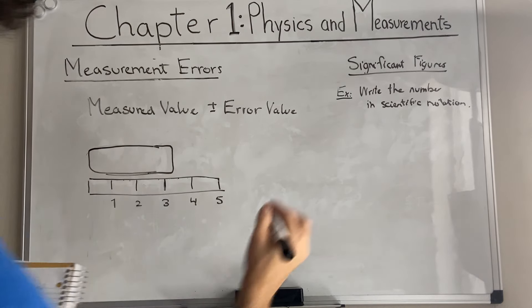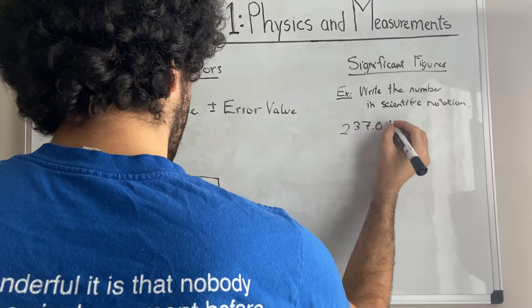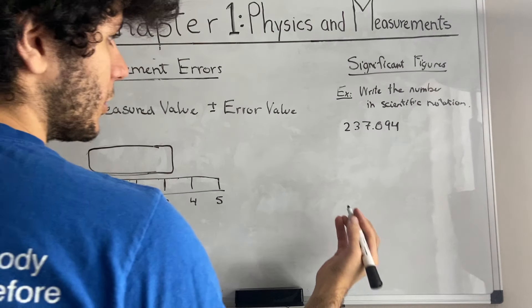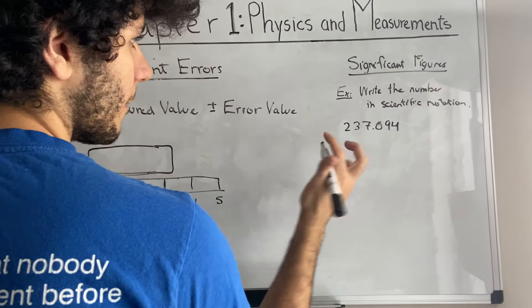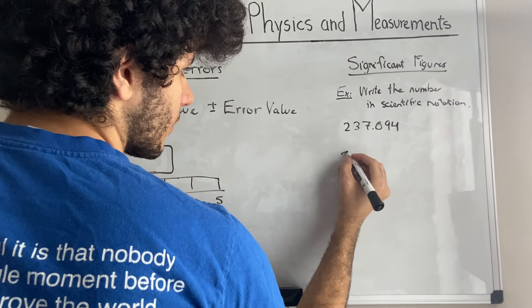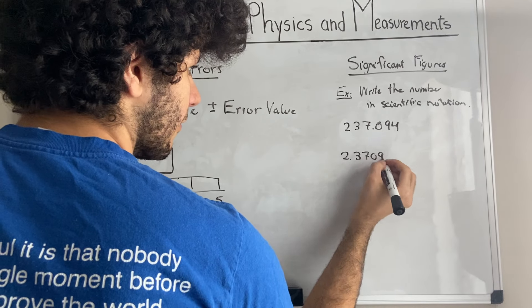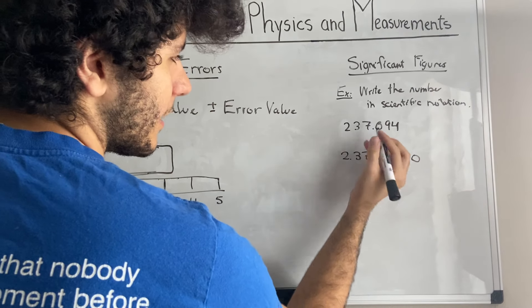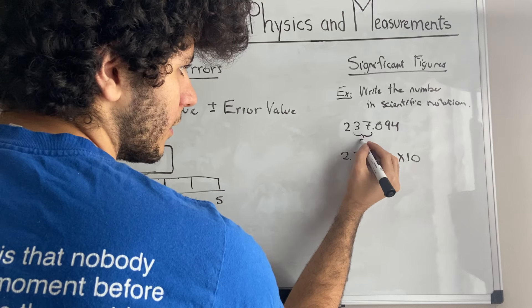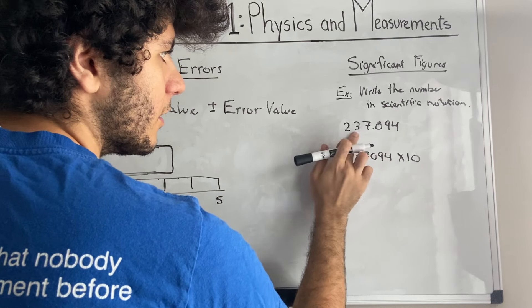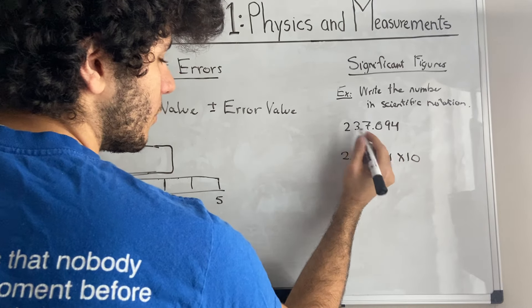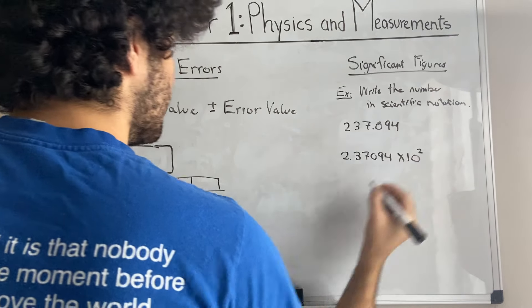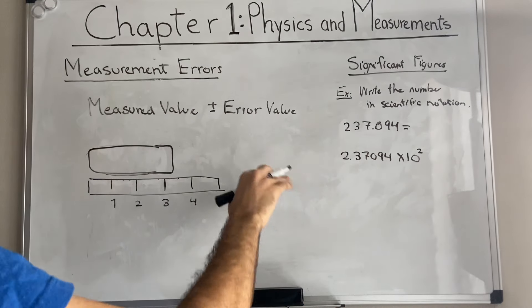Something that we're gonna use quite a bit, especially in labs. Not as much in actual theory. We have 237.094. If we want to write this number in scientific notation, we're gonna want to have the decimal point over here. So 2.37094 and then we're gonna multiply by 10 to the something, to the x. And in this case, it will be 2. Since we removed the decimal point by two places to the left. Meaning there's a hundred that should be multiplied. So this is equal to that. And that's scientific notation.